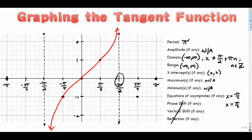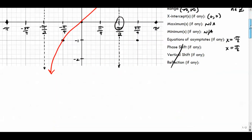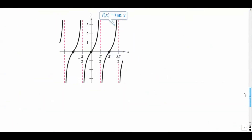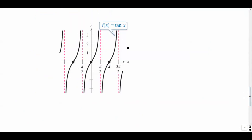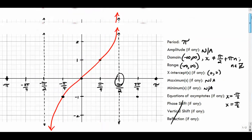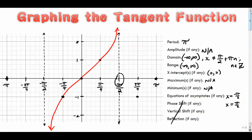No phase shift, vertical shift, or reflection yet — we'll get to those in a future video. This is the basic tangent function; the cycle I showed you is just this main cycle. In the next video we're going to get into all the reciprocal functions: one over sine, one over cosine, and one over tangent.